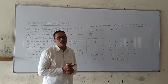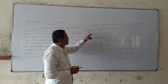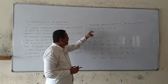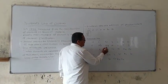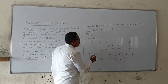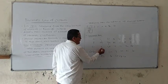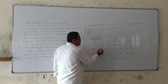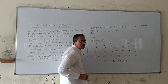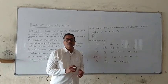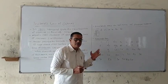Just like the musical octaves, Newland proved that every eighth element shows similar properties to the first. For example, sodium at first position and potassium at the eighth position — potassium shows similar properties to sodium. Similarly, calcium shows similar properties to magnesium, meaning every eighth element shows similar properties to the first element.